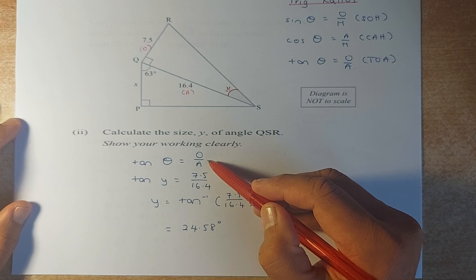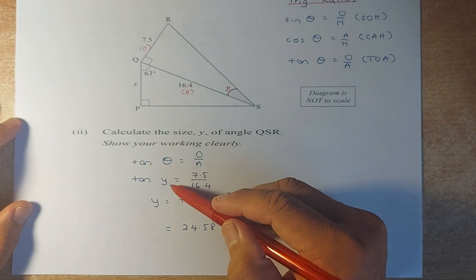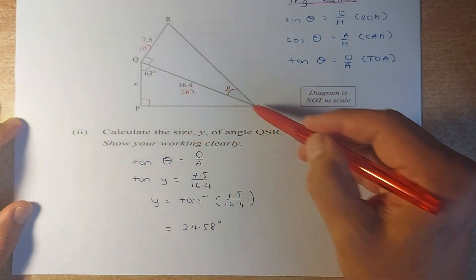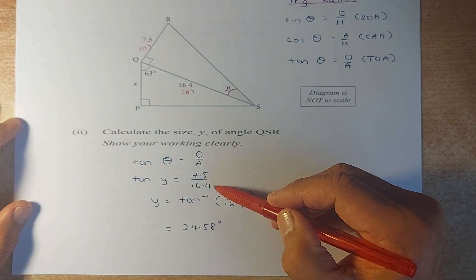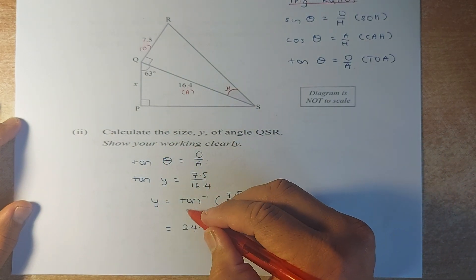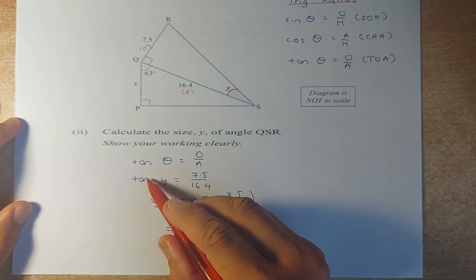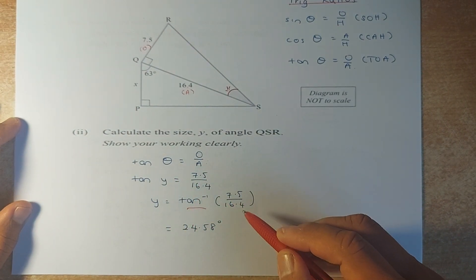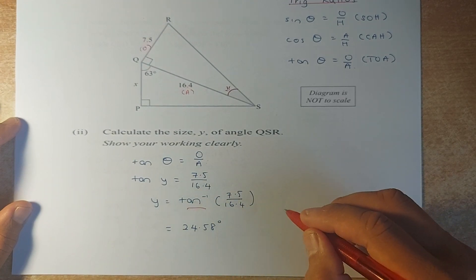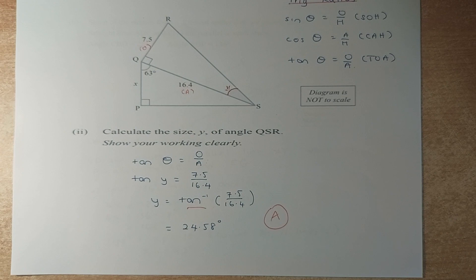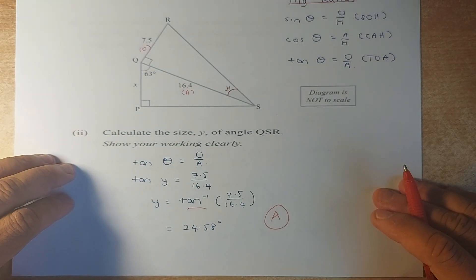Next step, substitute in the value. Instead of theta, it's going to be Y. Instead of opposite, it's going to be 7.5. Instead of adjacent, it's 16.4. To calculate the angle Y, you just need to inverse the tangent. So bring the tangent over to become Y equals tangent inverse of that number. Put in your calculator. It is 24.58 degrees. Again, this is an easy achieve. Not too bad, right?